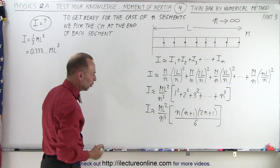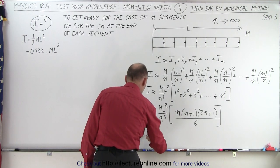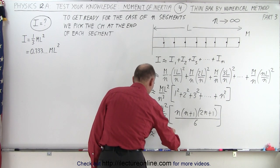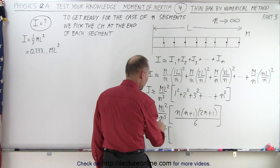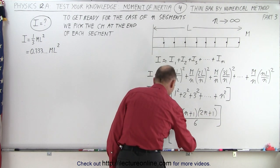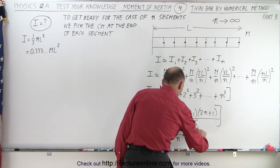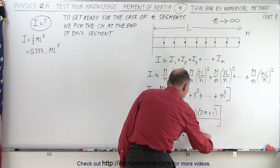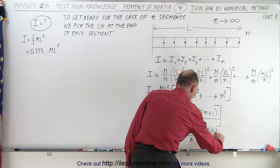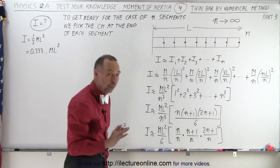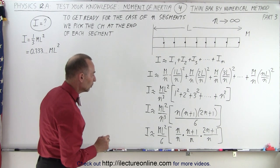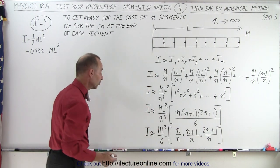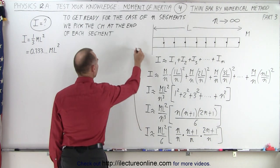Now if we rearrange the terms, we can say that I is approximately equal to mL² over 6 times, bringing the n³ into the brackets, we write this as (n/n) times ((n+1)/n) times ((2n+1)/n). There's a reason why we write it like that — we can divide the n into the numerator for each of those fractions.